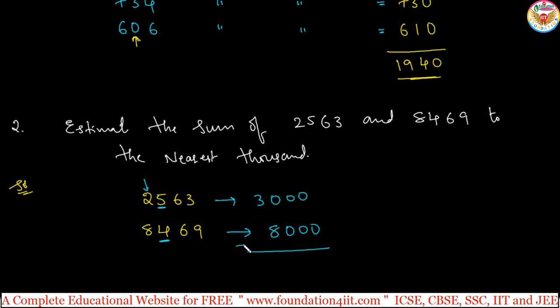3000 plus 8000. So direct answer it is 11,000. So 11,000 is the estimate the sum of 2563 and 8469 to the nearest to 1000.